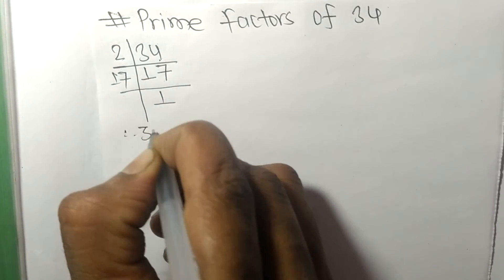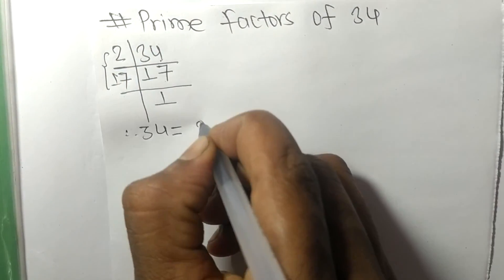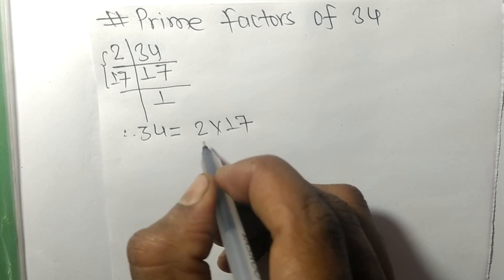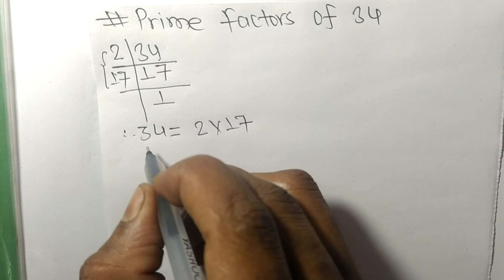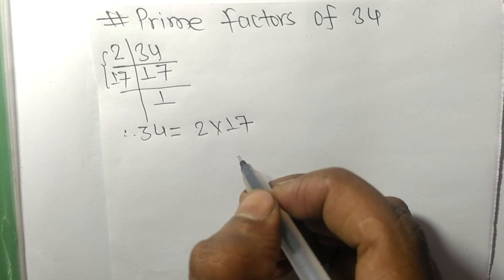So 34 is equal to 2 times 17. So 2 and 17 are the prime factors of 34. So this much for today and thanks for watching.